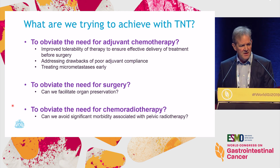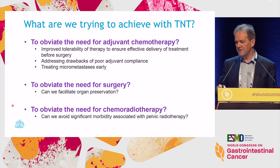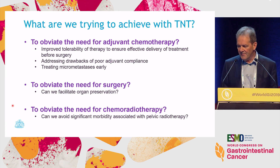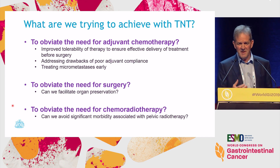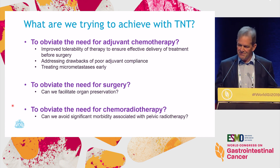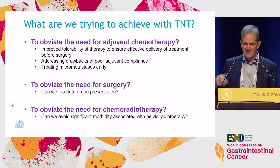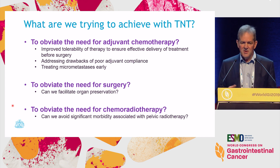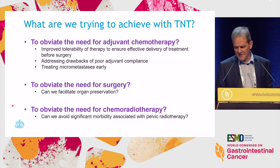You might want to obviate the need for systemic chemo. They're all going to get it anyway, so why don't we give it up front? That way we'll be hitting micrometastasis sooner rather than later. Will we get better compliance? We know from every piece of research conducted that if you give treatment before the operation, you tend to get higher compliance. And you can improve tolerability.